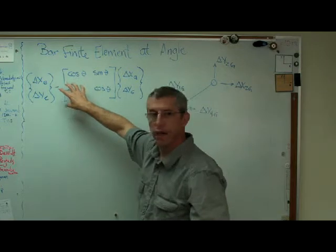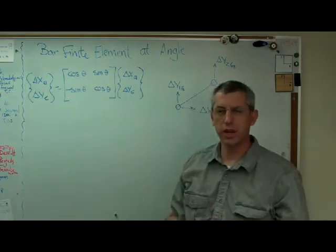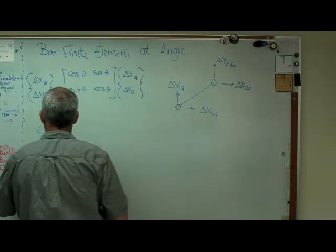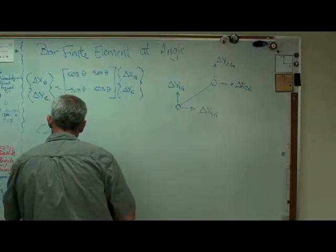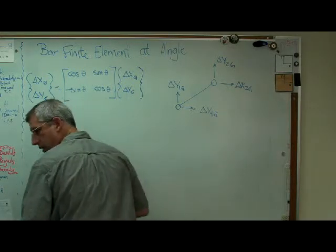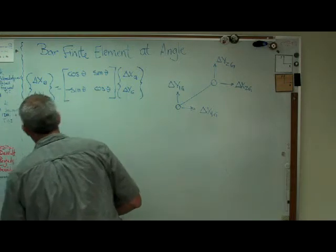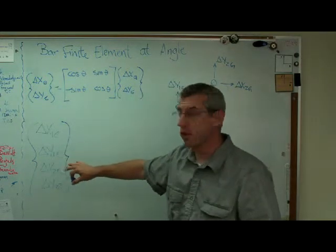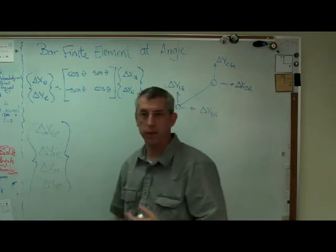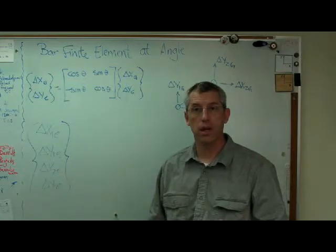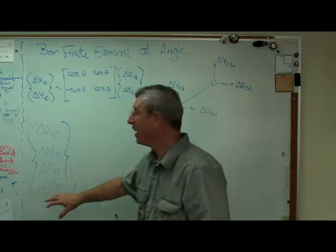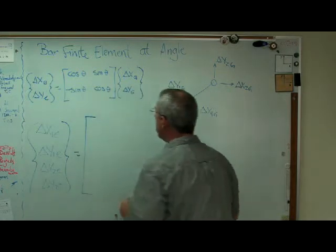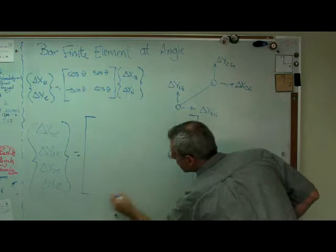Now, I can relate global to element coordinate systems at a point. Changes in the location of that point in global, changes in the location of that point in element coordinates. But I got two points there. I've got to do this twice. Well, how do I do that? The element itself only has two degrees of freedom. The element only can move along its axis at those two points. But in global coordinates, I really have four degrees of freedom. One, two, three, four. To make four, all I've got to do is write this down twice.